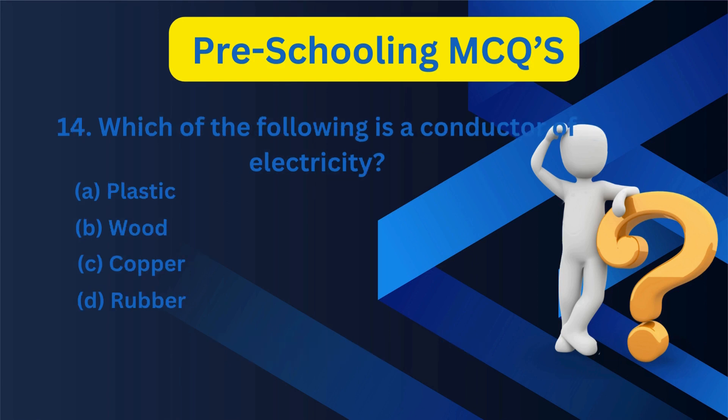14. Which of the following is a conductor of electricity? A. Plastic, B. Wood, C. Copper, D. Rubber. C. Copper.